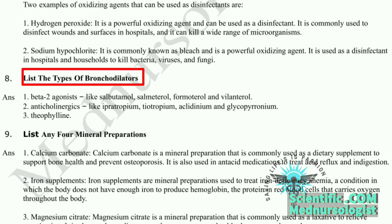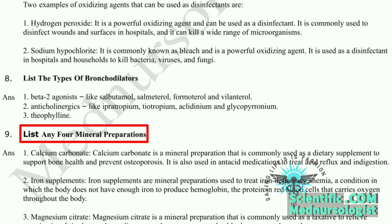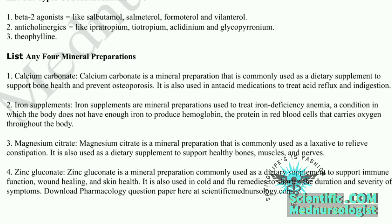The eighth question asks to list types of bronchodilators, which include: first, beta-2 agonists; second, anticholinergics; third, theophylline. The ninth question asks to list any four mineral preparations — answers include: ferrous sulfate, magnesium sulfate, sodium bicarbonate, hydrogen peroxide, and aluminium hydroxide.